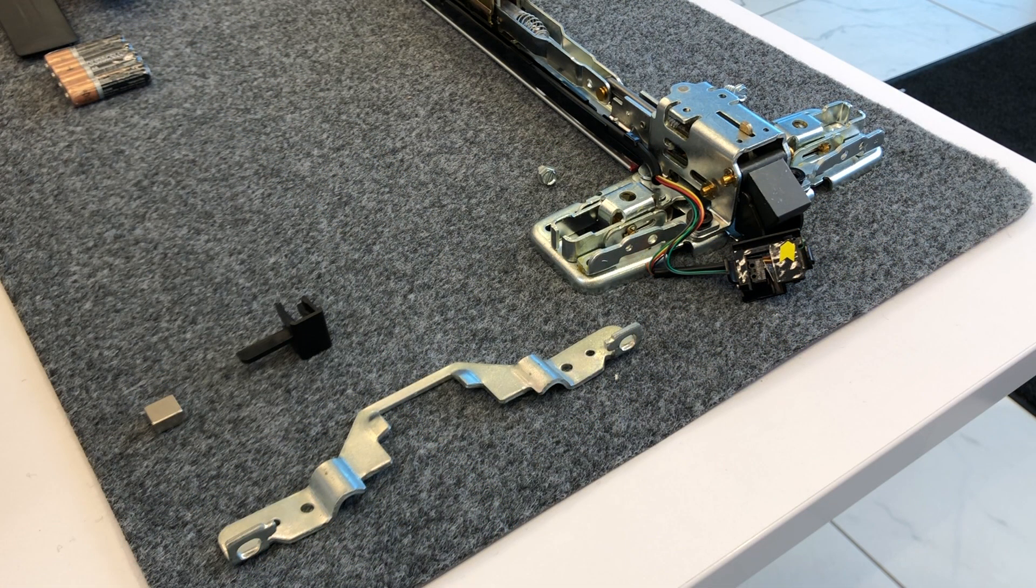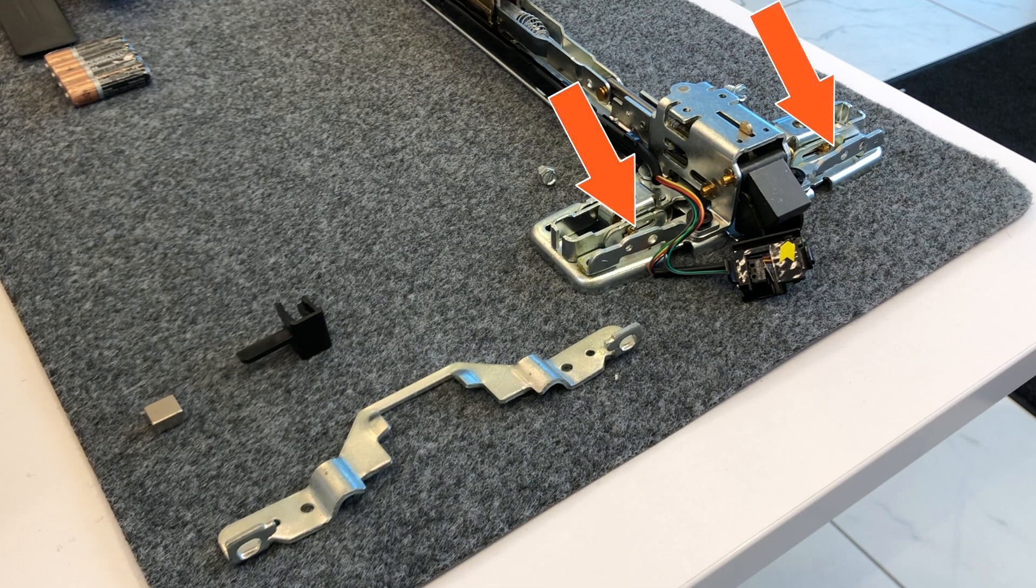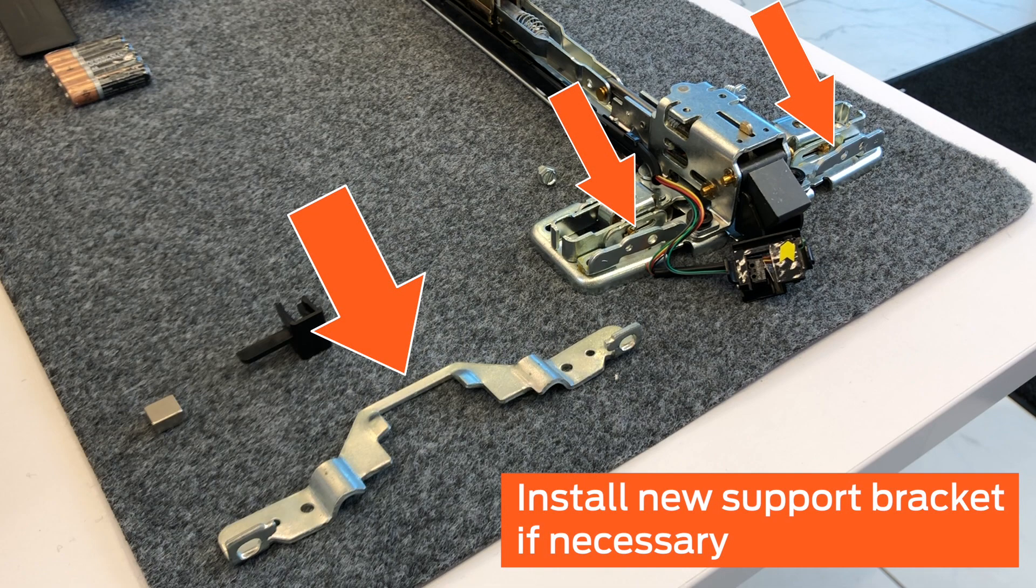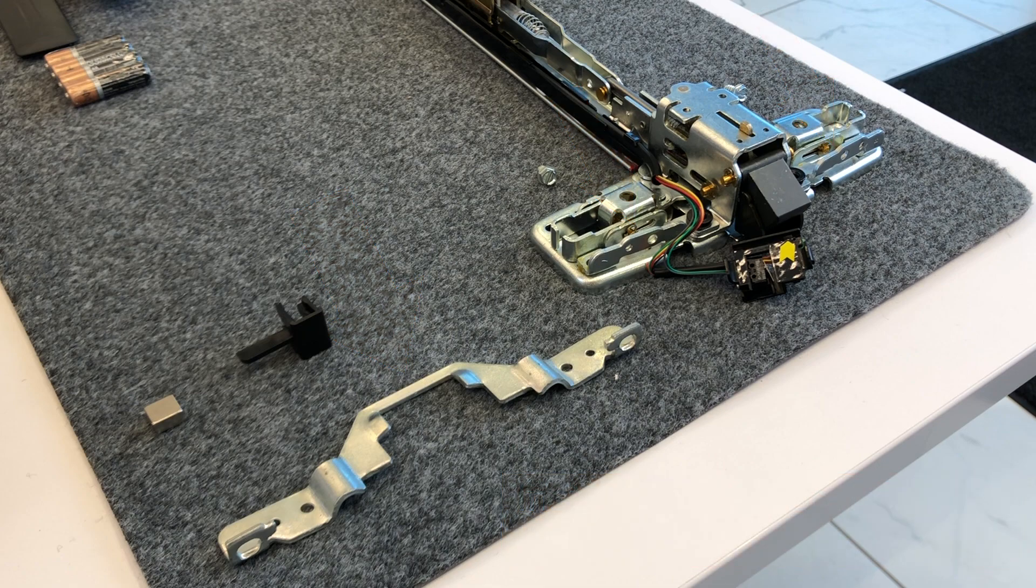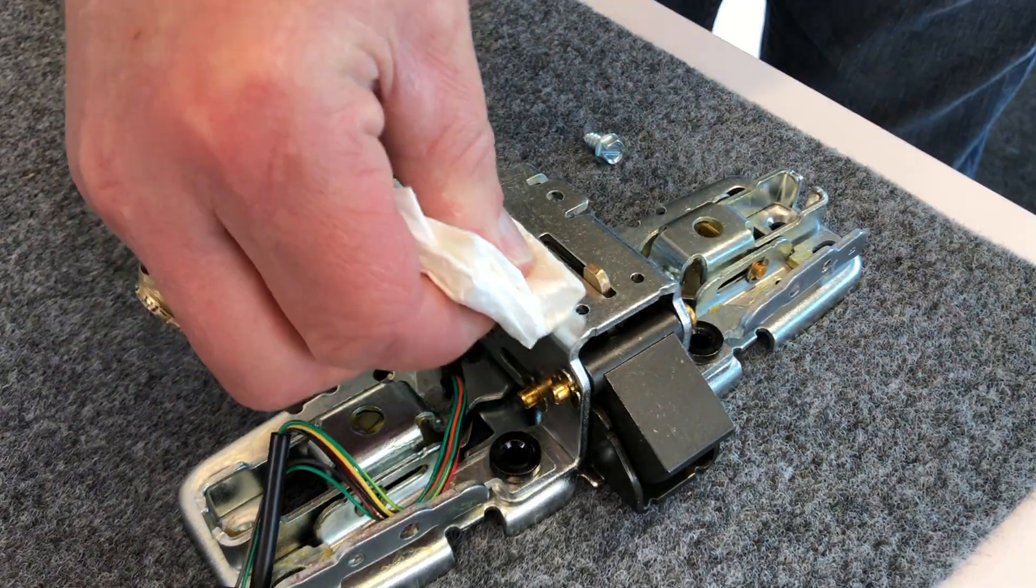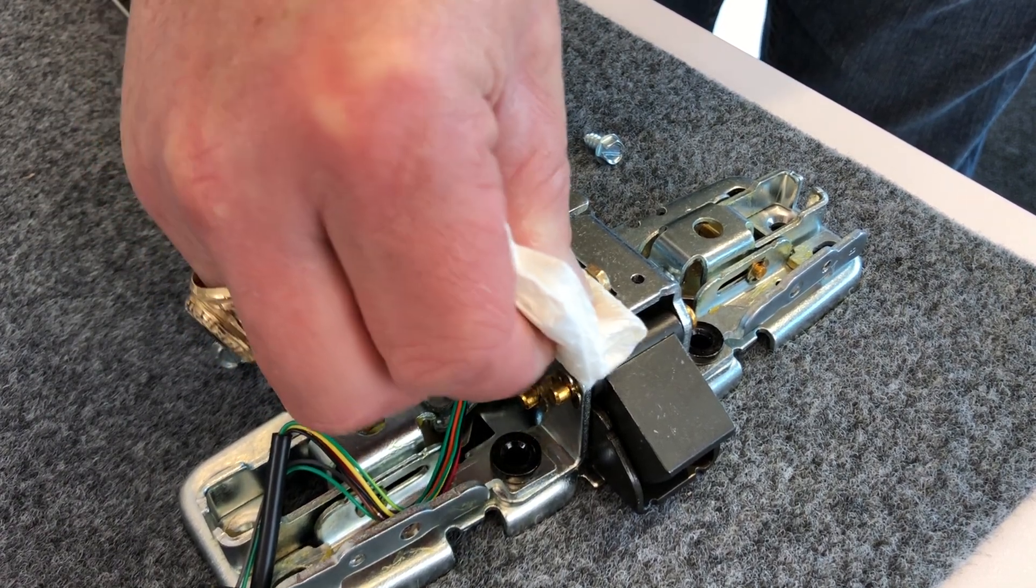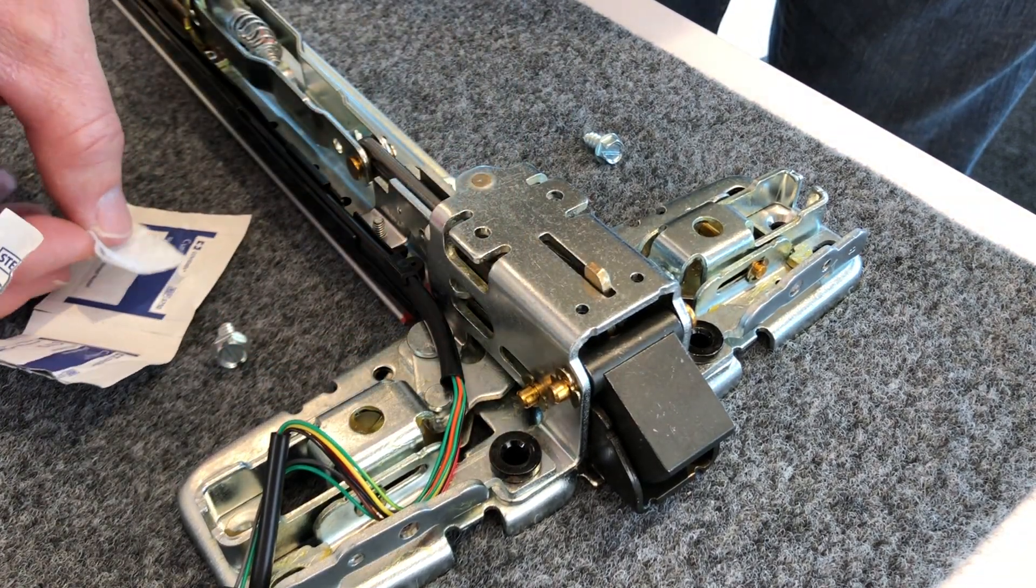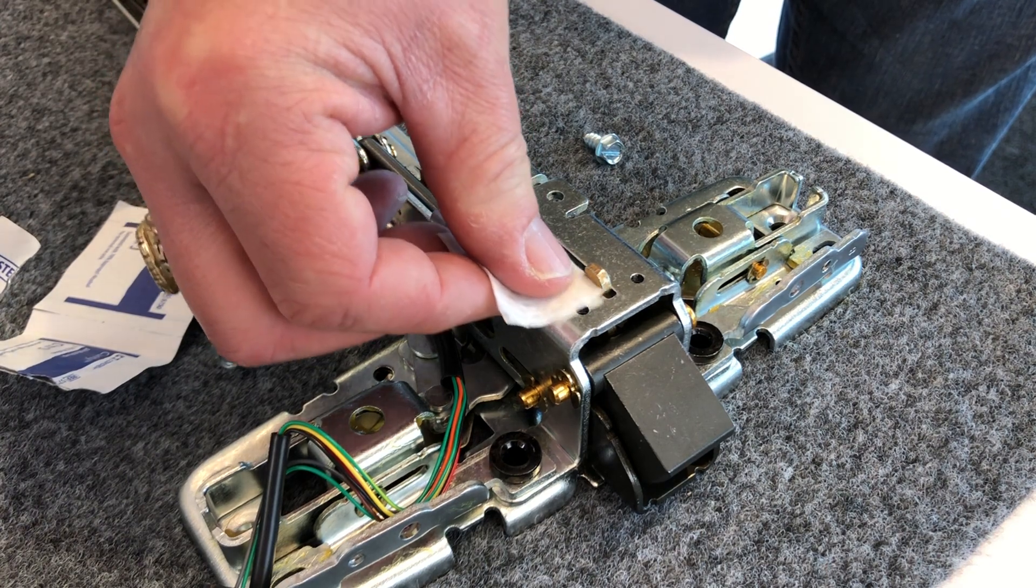If you removed the support bracket in an earlier step, install the included bracket now. In this video, the existing bracket is not removable, so the bracket from the kit will not be used. Use the dry cloth to wipe the grease and any loose dirt from the area surrounding the tail fin. Then, use the included alcohol wipe to fully clean the surface.